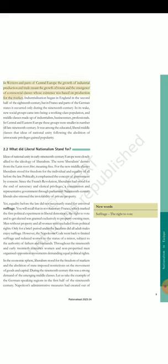In Western and parts of Central Europe the growth of industrial production and trade meant the growth of towns and the emergence of commercial classes whose existence was based on production for the market. Industrialization began in England in the second half of the 18th century, but in France and parts of the German states it occurred only during the 19th century. In its wake, new social groups came into being — a working class population, and middle classes made up of industrialists, businessmen, professionals. In Central and Eastern Europe these groups were smaller in number till the late 19th century. It was among the educated, liberal middle classes that ideas of national unity following the abolition of aristocratic privileges gained popularity.